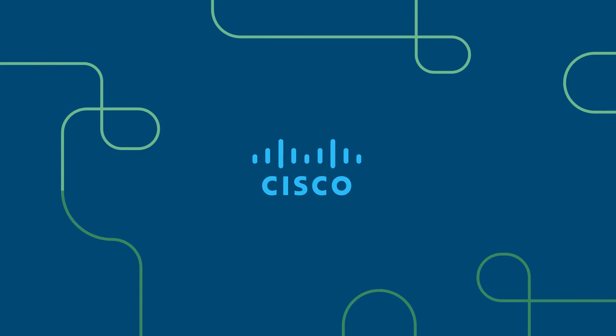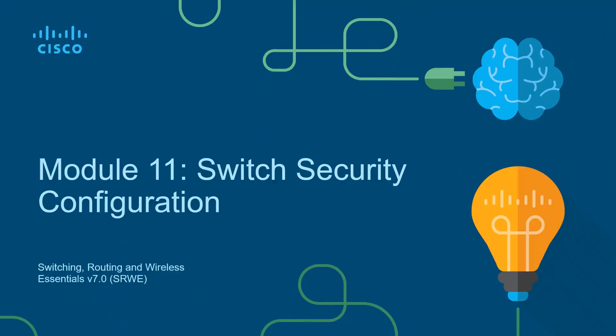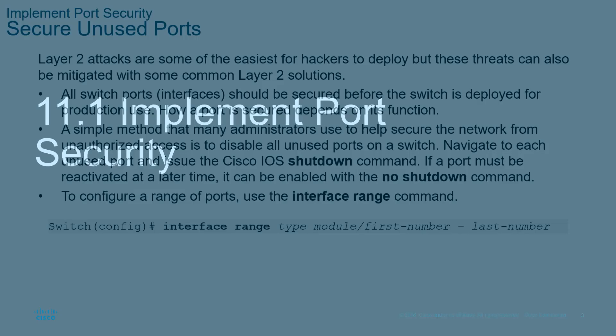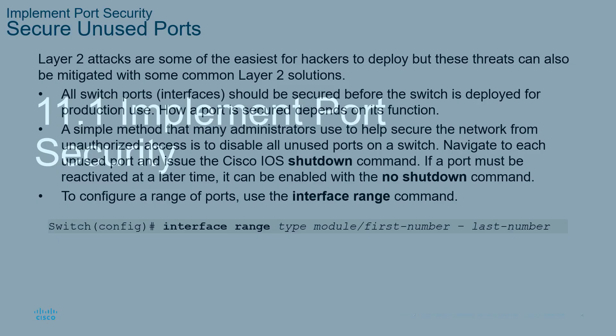Welcome to my Switching, Routing, and Wireless Essentials course. This should be the CCNA version 7 curriculum. This is the second of three courses. Module 11, Switch Security Configuration. We're going to be looking at port security, and we're going to be looking at ways to mitigate VLAN, DHCP, ARP, and SDP-based attacks a little more in-depth than we did in the previous lecture. So let's go ahead and jump right on in.